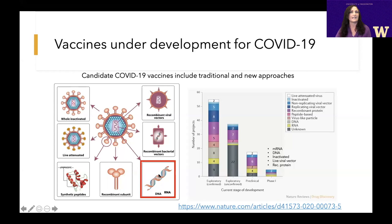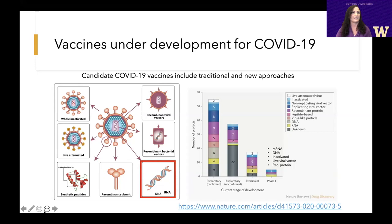The other new kids on the block are DNA and RNA vaccines, collectively called nucleic acid vaccines. They share similarity with recombinant viral vectors, but differ in that they don't use a virus to deliver genetic material into your cells. Instead, we use other methods to deliver genetic material directly into your cells, and then it instructs your own cells to start producing the vaccine.